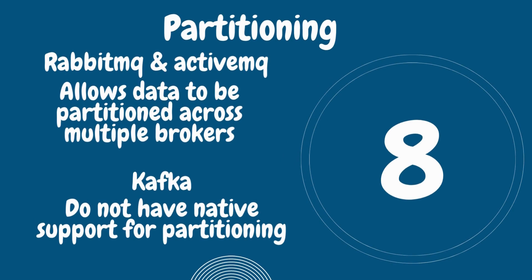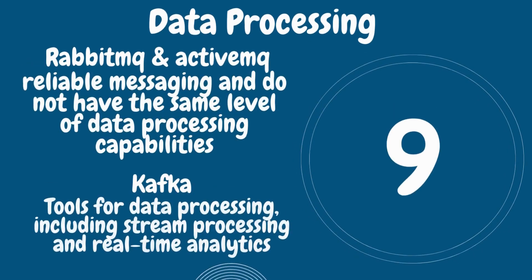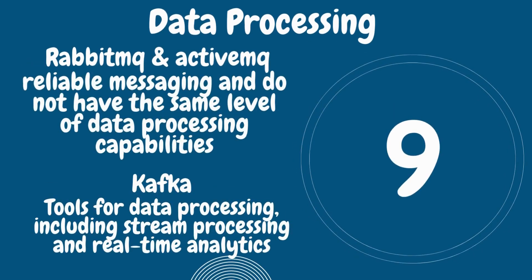Number eight is partitioning. Kafka allows data to be partitioned across multiple brokers, which enables high availability and parallel processing. RabbitMQ and ActiveMQ do not have native support for partitioning.